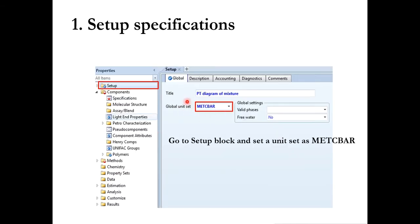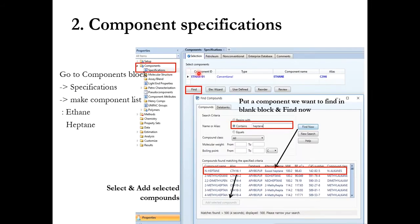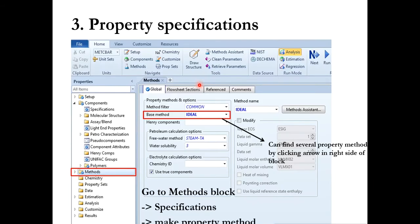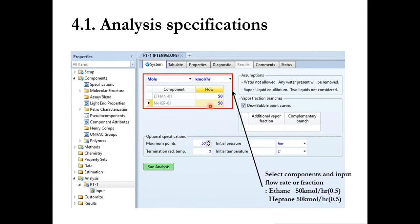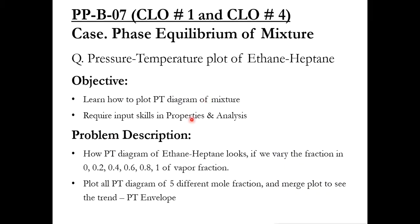For Task 1, we first select the proper units — these are the default units already selected in Aspen. Then we select the components ethane and heptane, and start with the ideal property package. We select the analysis tab, choose PT envelope, and specify the flow rates. For the first problem we specify equimolar flow and add vapor fractions of 0.2, 0.4, 0.6, and 0.8. There is no need to enter 0 or 1, as they will be selected by default.